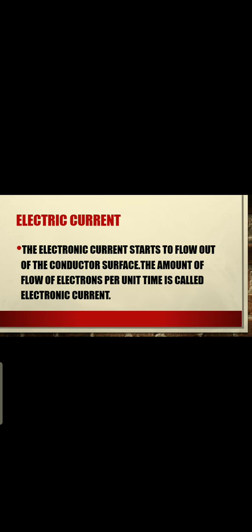The electronic current starts to flow out of the conductor surface. Basically, the electron amount increases, the electrons get free, and they start to move. The amount of flow of electrons per unit time is called the electronic current.